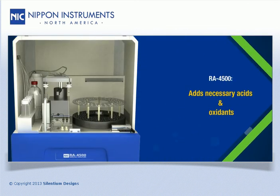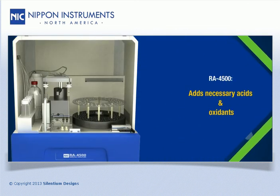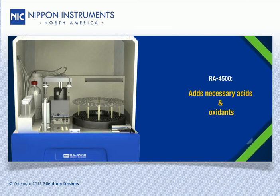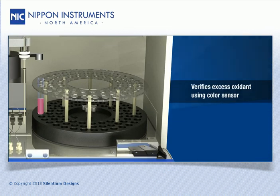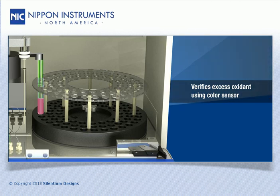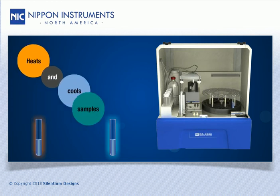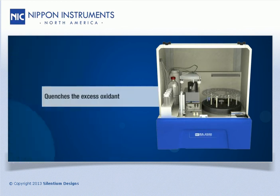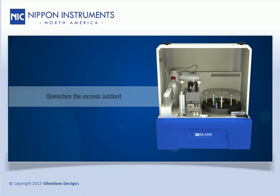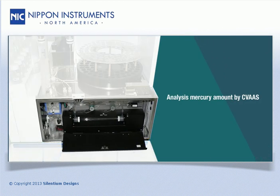The RA4500 accurately and precisely adds all necessary acids and oxidants to each sample, verifies the inclusion of excess oxidant with a built-in color sensor, heats and cools all samples, quenches the excess oxidant, and then performs mercury analysis by CVAAS in one fully automated, seamless, and unattended operation.